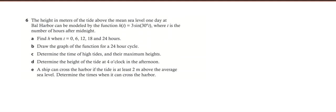So we've got the height in metres of the tide above the mean sea level one day at Bal Harbour can be modelled by the function h(t) equals 3 sin 30t. What does it mean, that situation? What picture does it conjure up on the graph? What does it mean, the height in metres of the tide above the mean sea level?